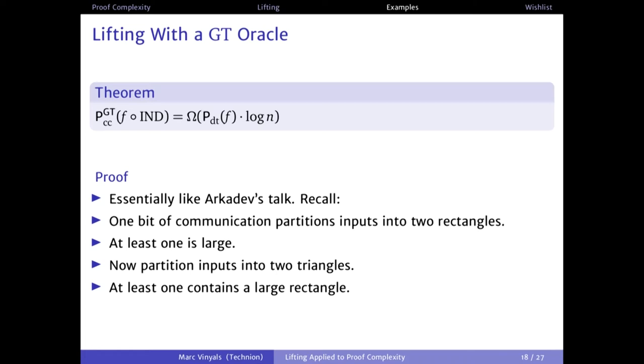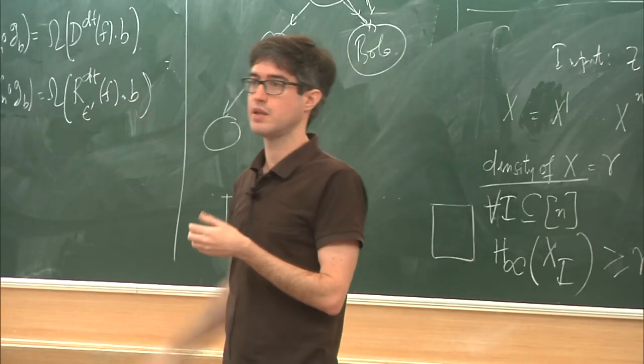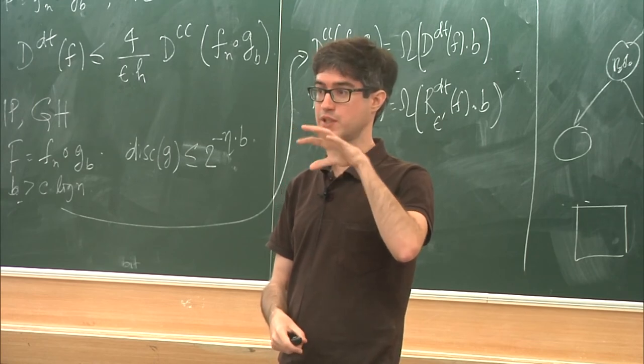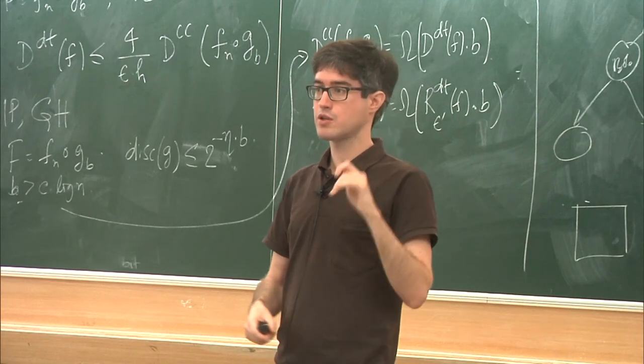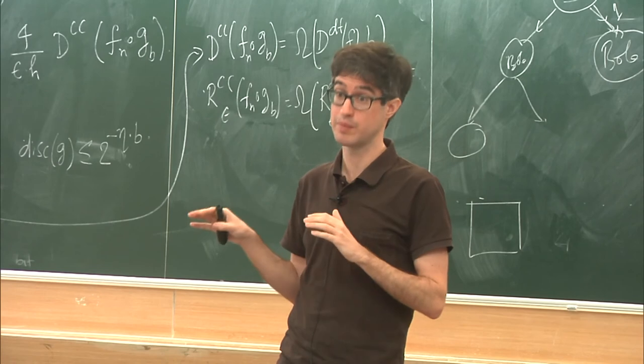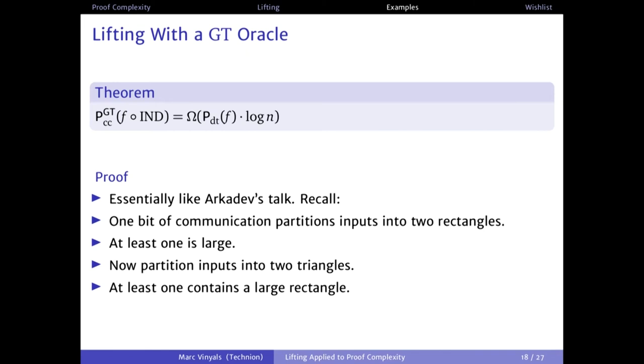This is the lifting theorem. We then take a formula, lift it, use this lifting theorem to prove it's hard for communication, and that immediately implies it's hard for tree-like cutting planes. We have to be careful though: to get the separation, we need our original formula to be easy for resolution, and to remain easy after lifting — but this can be done. The reason for using the greater-than oracle model is that it's simpler to work with. If you want to prove new lifting theorems, it's probably easier to prove them with a greater-than oracle first.